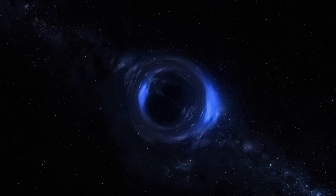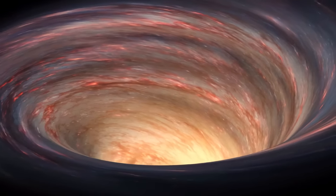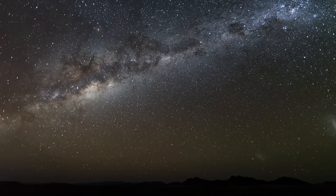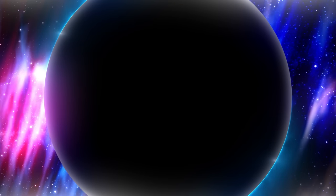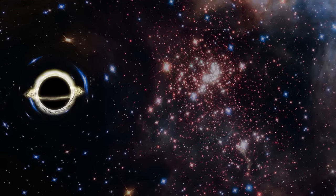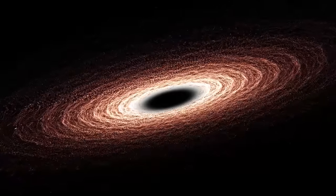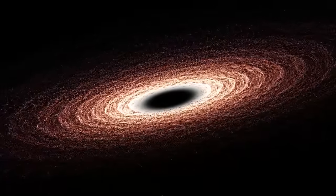Black holes, regions of space where gravity is so strong that nothing can escape, not even light, are enigmatic enough on their own. But sometimes, in the vast cosmic dance of the universe, two black holes find themselves in a close gravitational embrace, leading to the awe-inspiring phenomena of binary black holes. In this cosmic tango, two black holes orbit each other, drawn together by their immense gravitational pull. As they spiral closer and closer, they begin to affect the very fabric of space-time itself. This effect is so intense that it sends ripples across the universe.